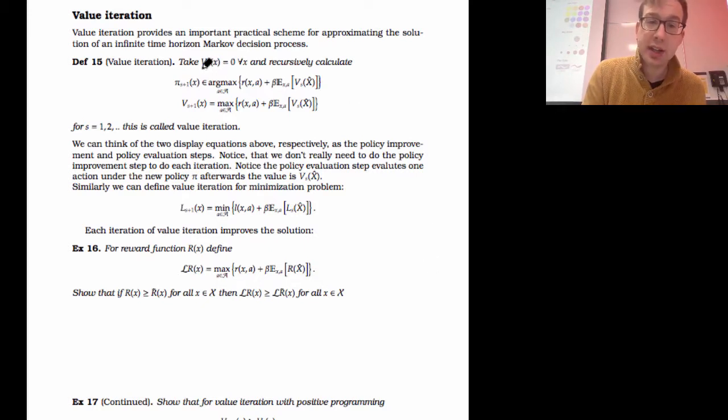Value iteration provides a very important and practical scheme for approximating the solution to an infinite time horizon Markov decision process. How does it work? Initially, you take all the values for all the states that you consider to be equal to zero. You say the value, I know nothing at time zero, so the value of everything is zero. Then what you do is you say, given the value function from the last step, what is the best action that I can take over one time step? So I take an action a from state x, I get a reward rx of a, and then I apply beta times the expected value of the value function from the last step. If initially v of zero of x was zero, I'm just looking at the maximum reward I can get over one time step.